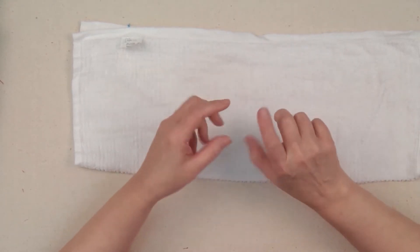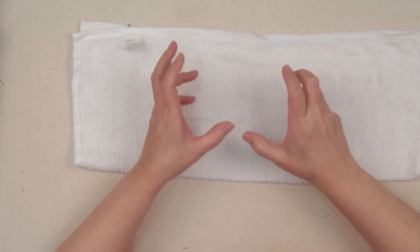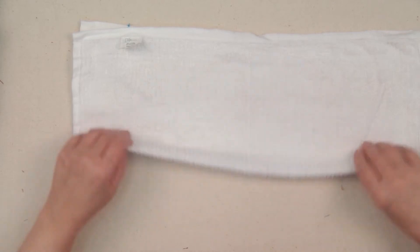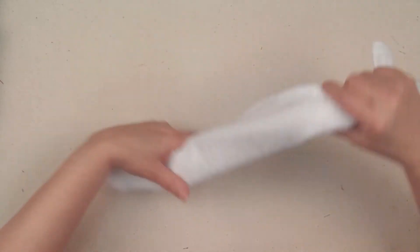The terrycloth gives you just a little bit of puff so it'll go in those crevices of the stitches and not push the stitches really flat and damage the actual embroidery. So it's a really important part to use that terrycloth.